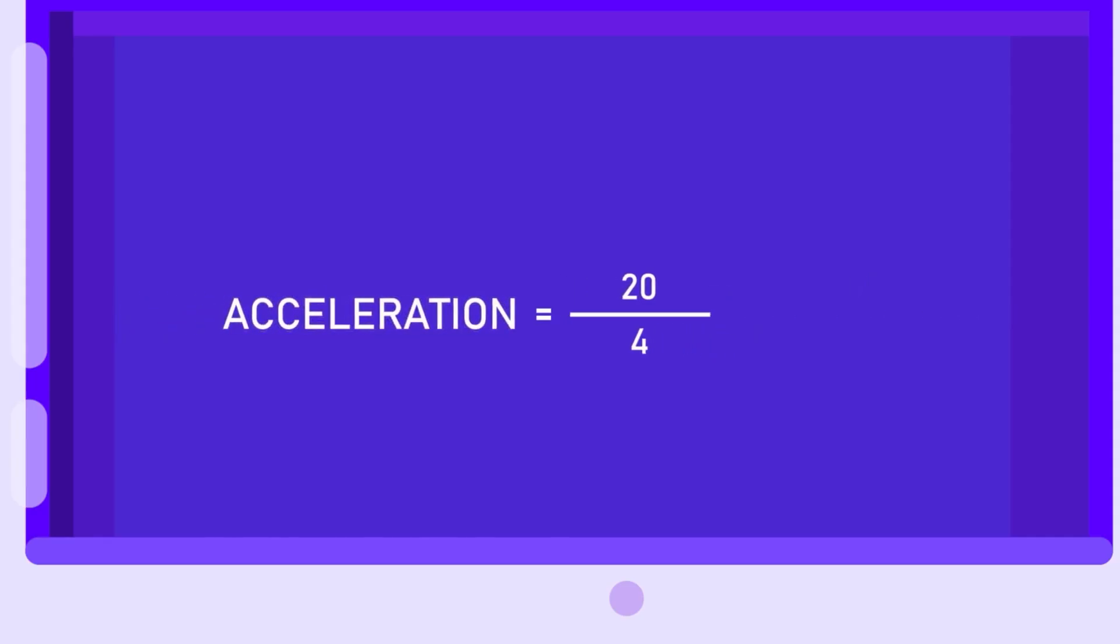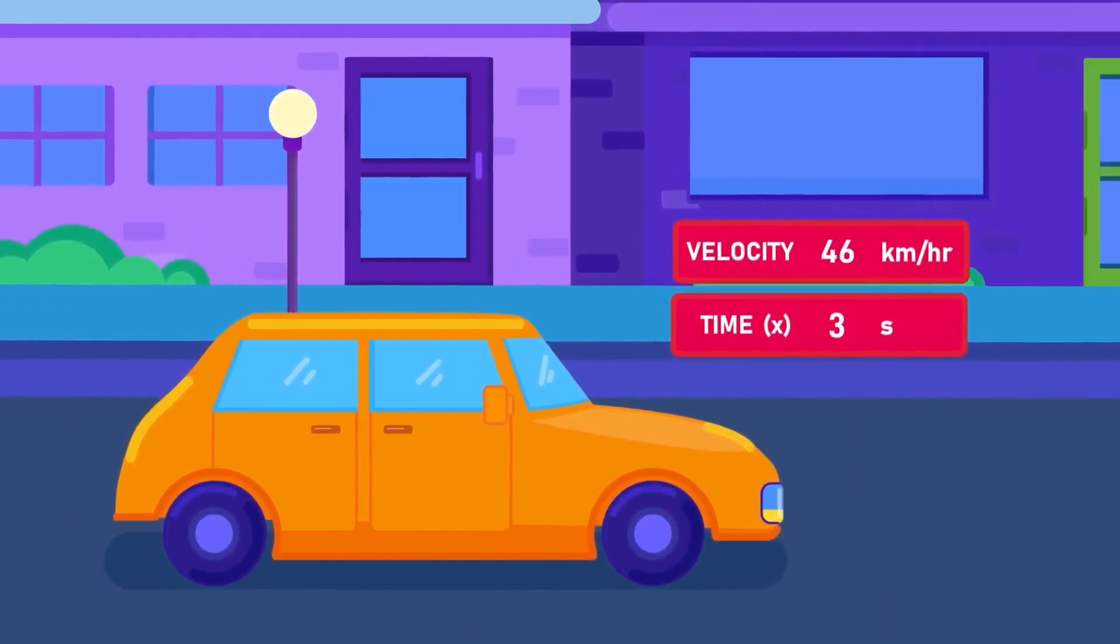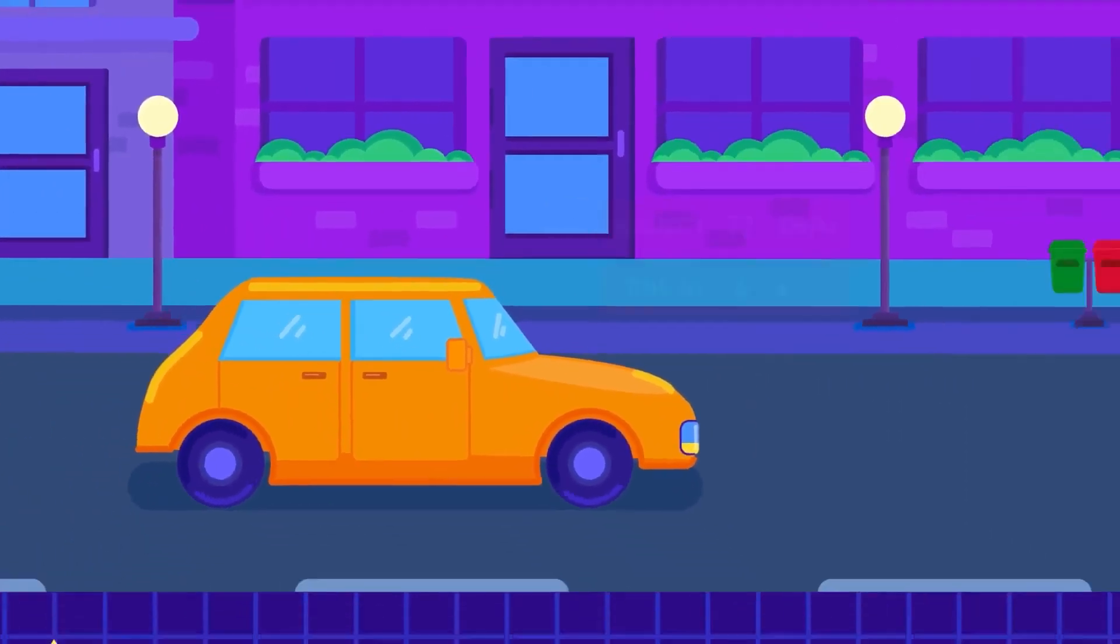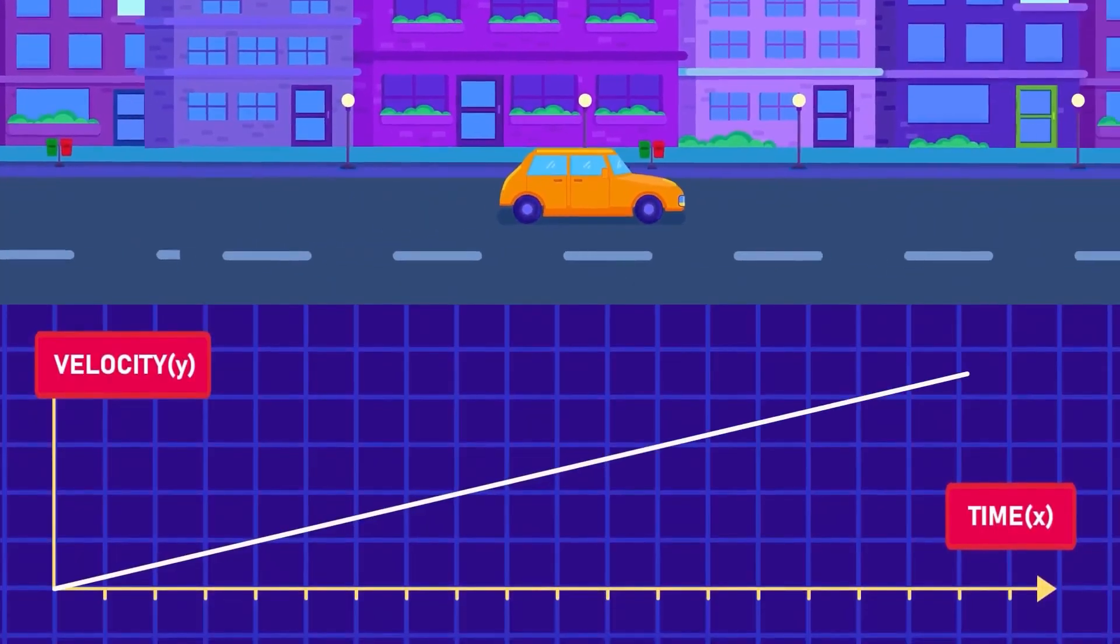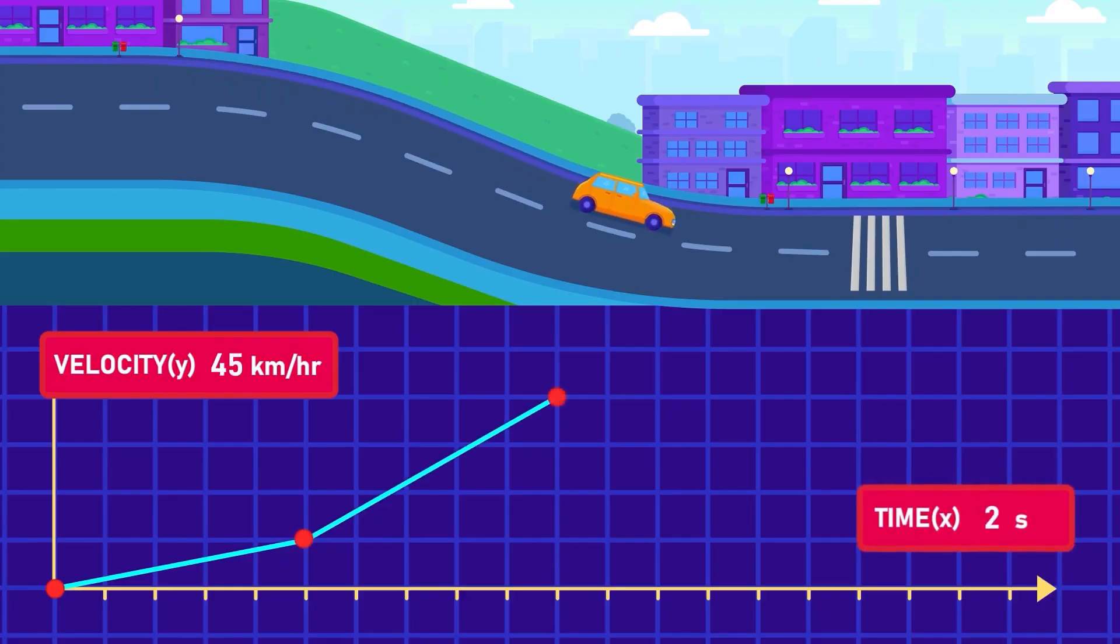Acceleration is then equal to 20 divided by 4, which is equal to 5 meters per second squared. If the car is indeed increasing its velocity by 18 kilometers per hour each second, the car undergoes uniform acceleration. But if the car has different changes of velocity each second, for example, a higher increase due to the downhill or slowing due to the speed bump, it is called non-uniform acceleration.